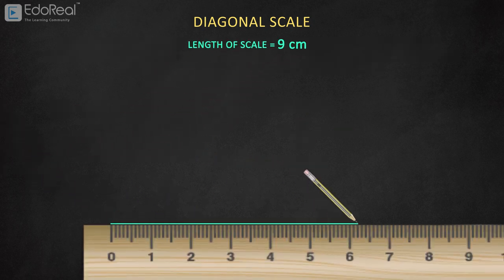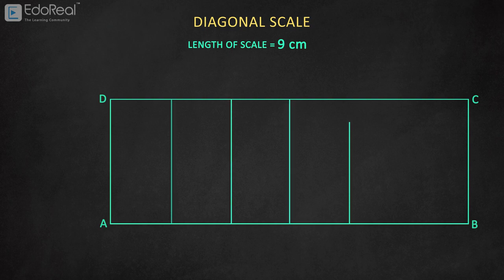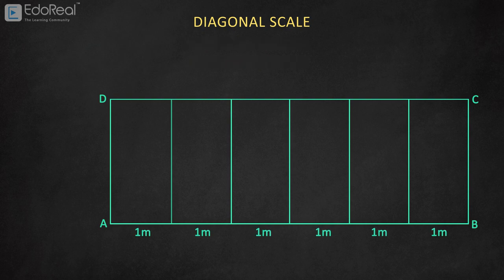So now let's draw a line of length 9 centimeters as LOS and name it AB. Now give a rectangular shape to the scale to make it look like a scale and name other ends as DC. And divide the line AB into six equal parts, as the maximum length to be measured is 6 meters.